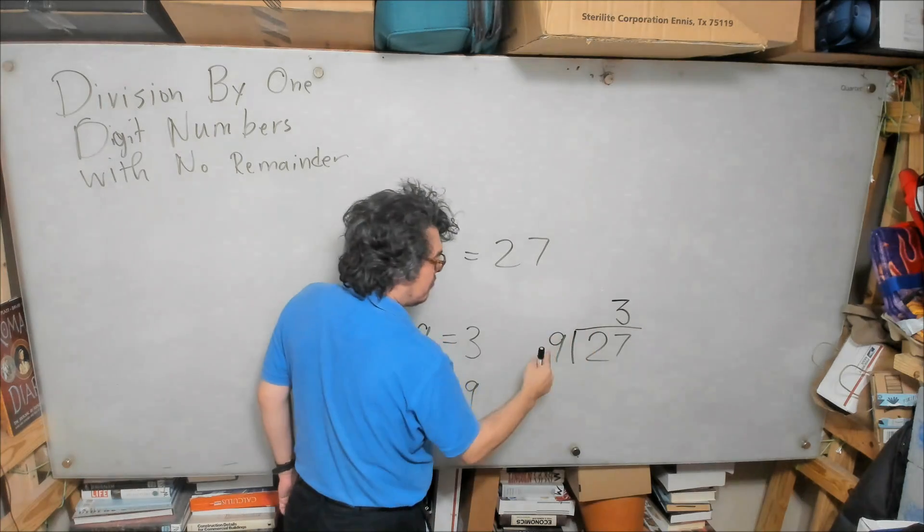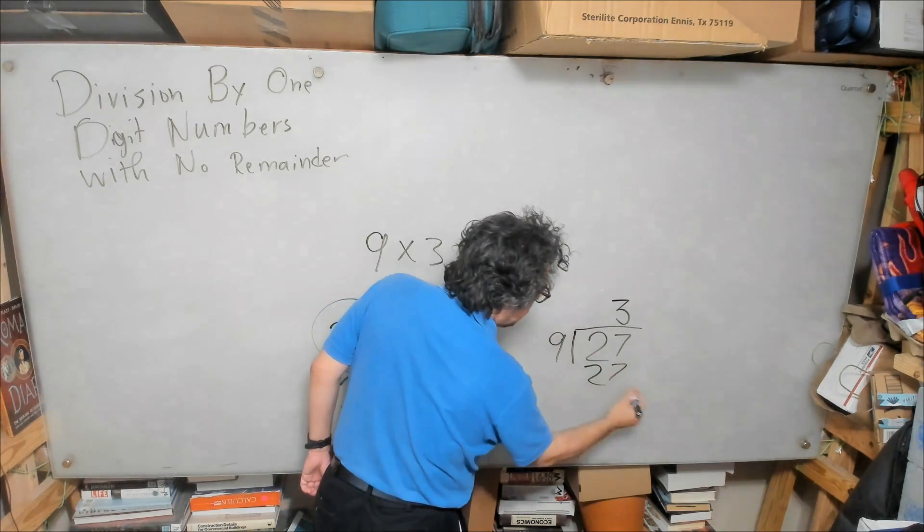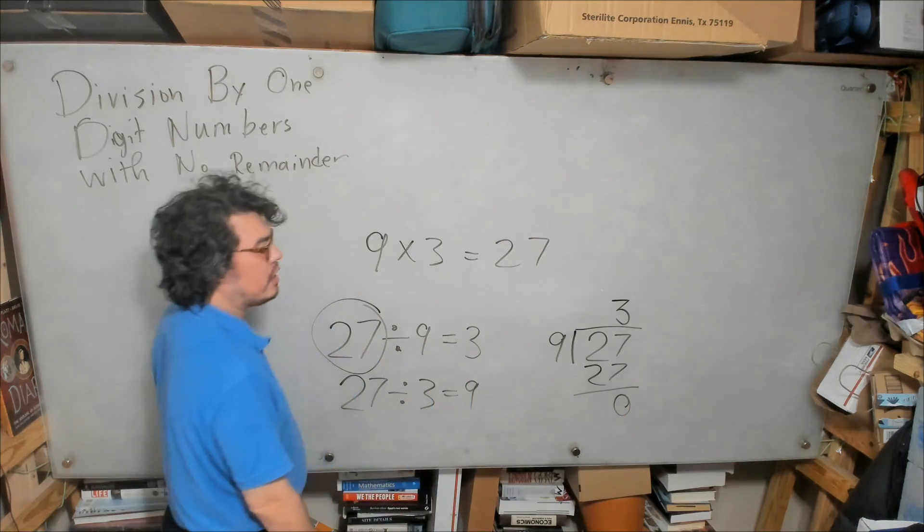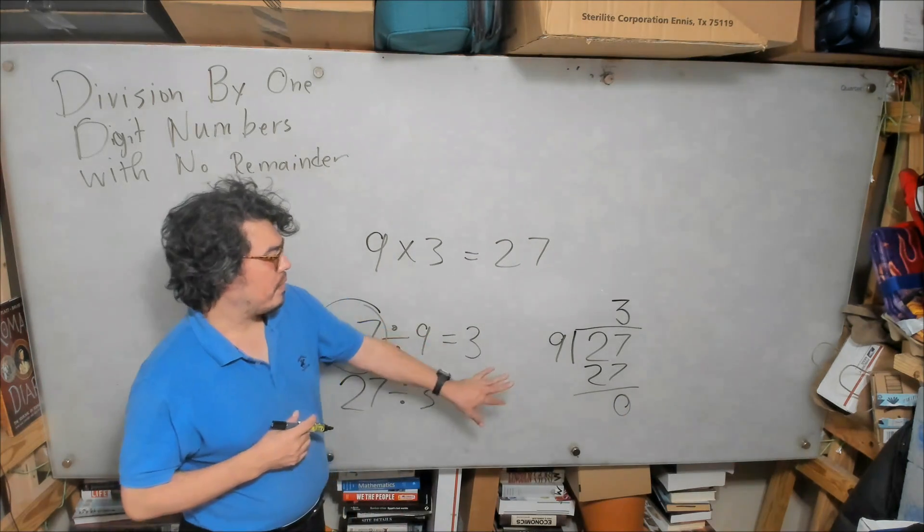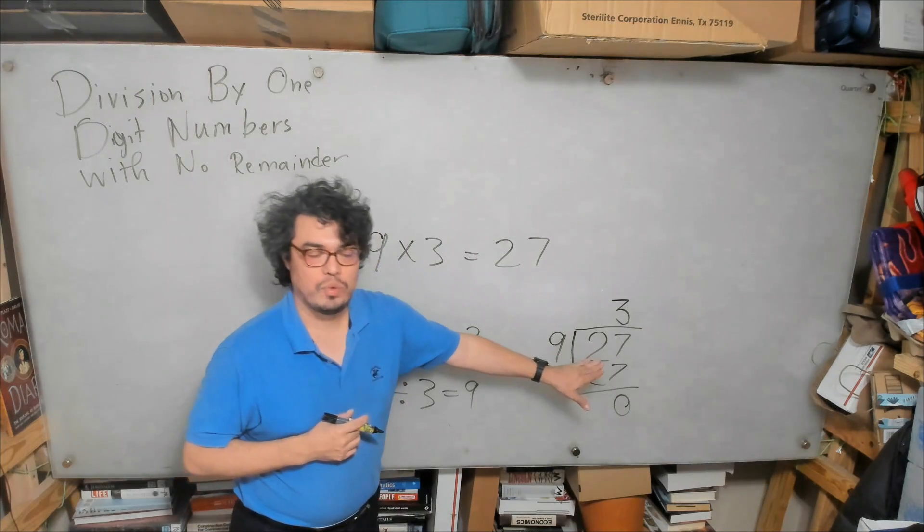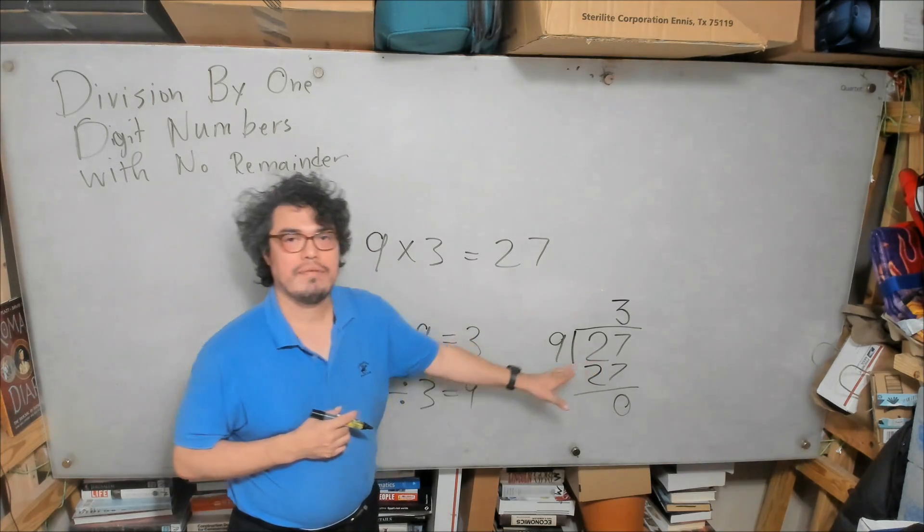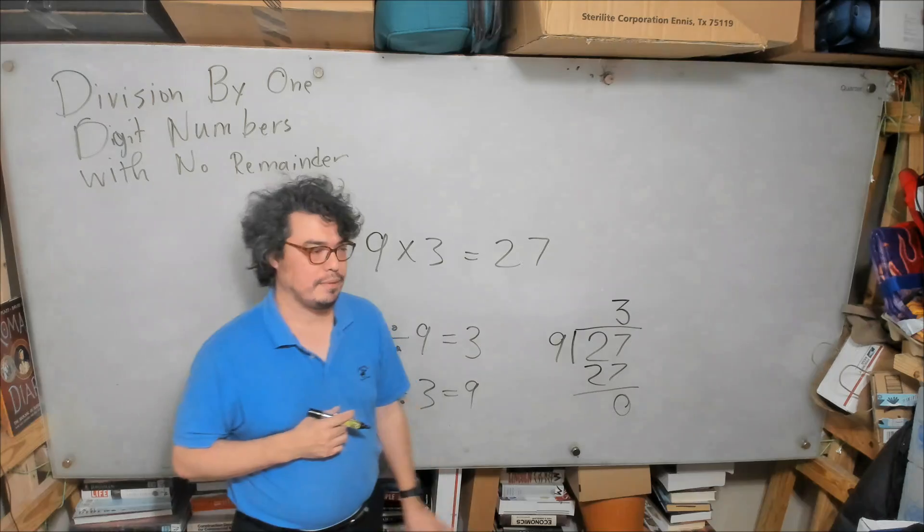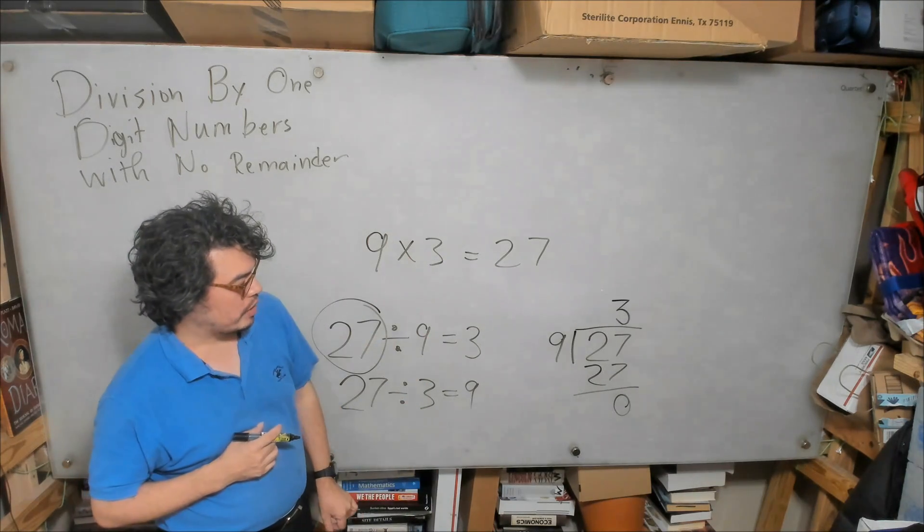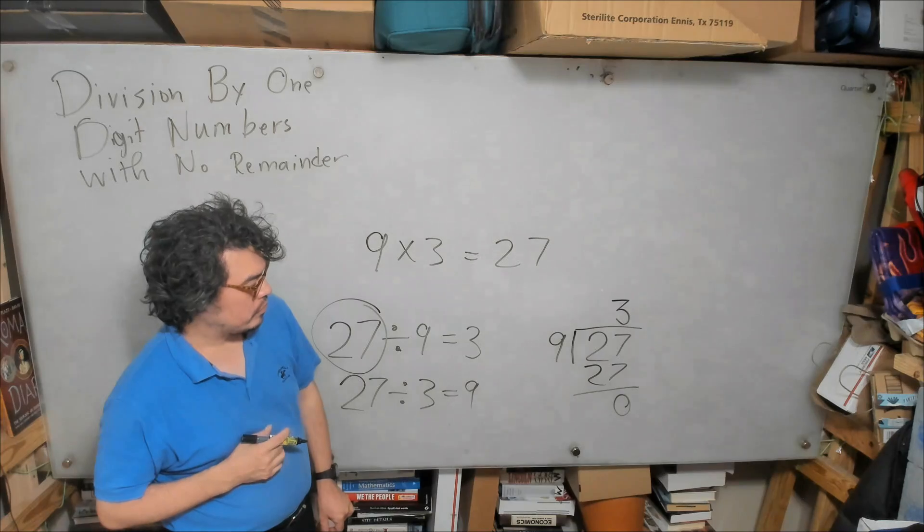3 times 9 is 27. And you can see if I subtract these, I get 0, because we know that 27 divided by 9 is 3 exactly, because of this multiplication fact.